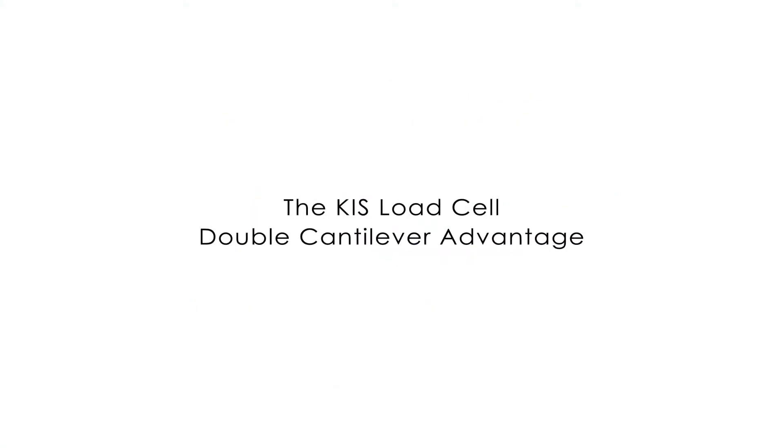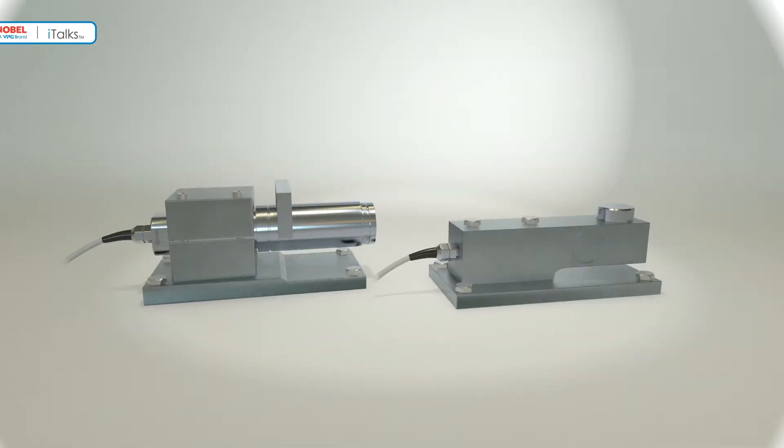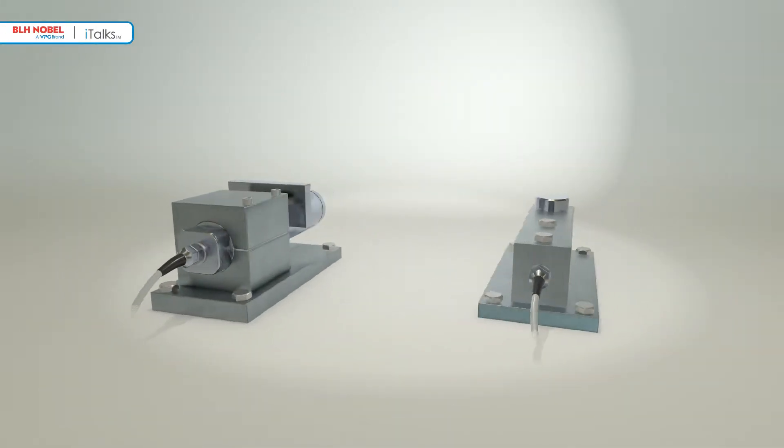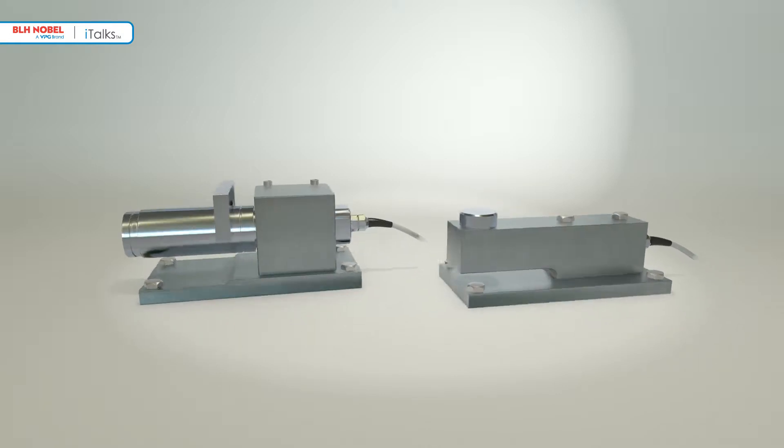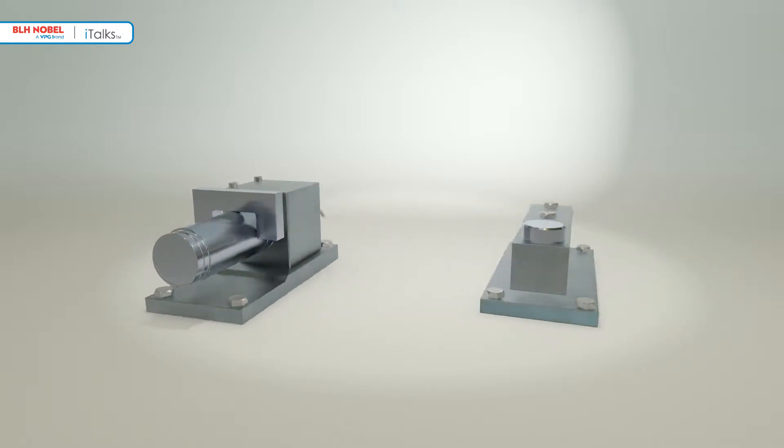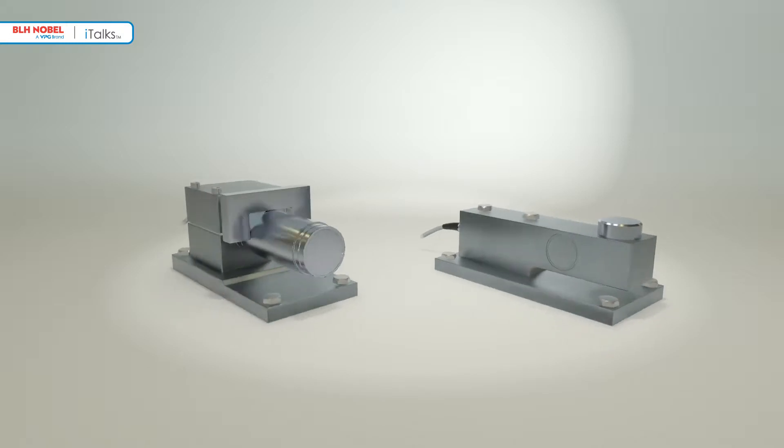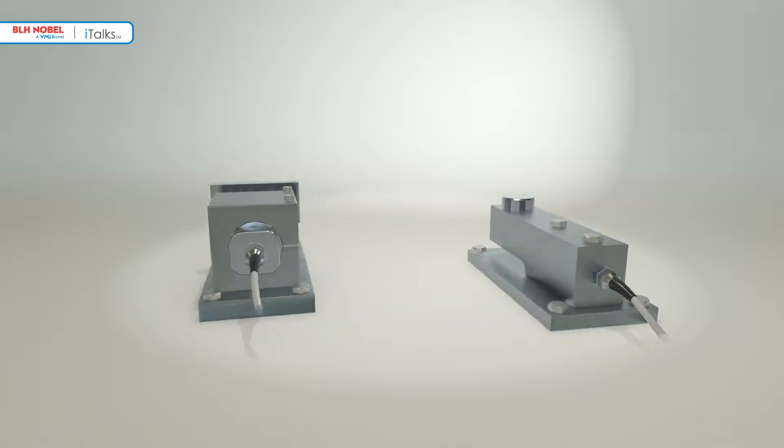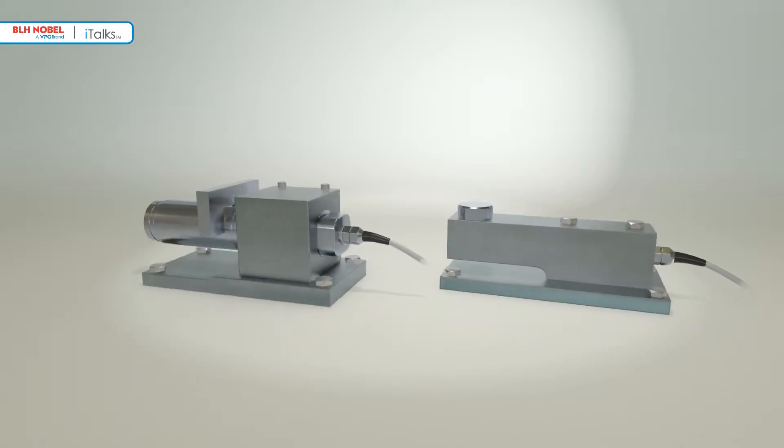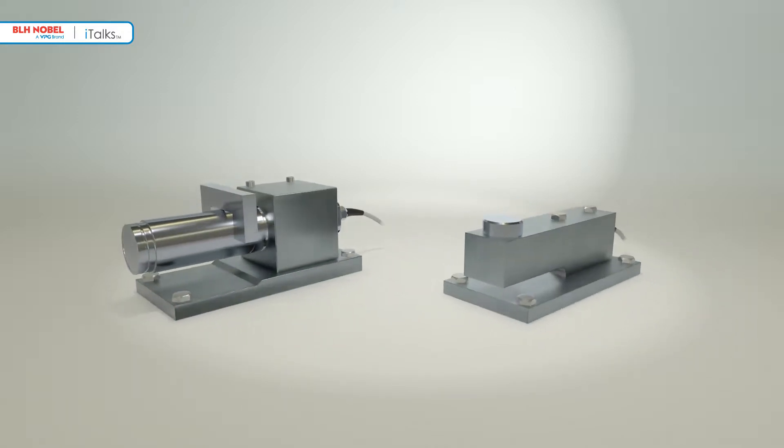The shear force strain gauge load cell has become the main component in most industrial vessel weighing systems. Understandably, these simple devices are often regarded as commodity items with little to differentiate one from another. However, a different story lies behind the spec sheet information. This presentation explains why.